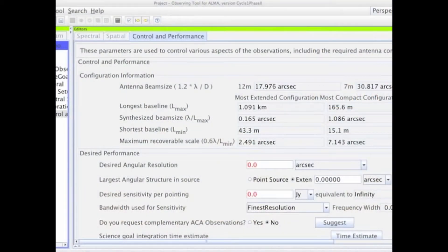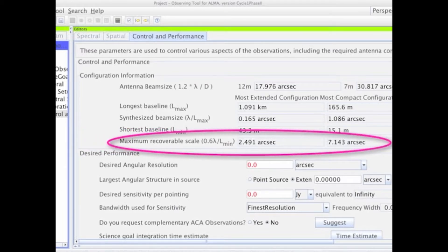While preparing an ALMA proposal using the Observing Tool, or OT, you noticed under Control and Performance something called the Maximum Recoverable Scale, and a question asking about the largest angular structure in source. What are these?